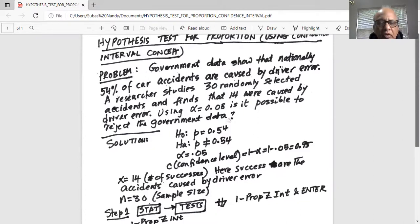And the alternate hypothesis, since we have not been told greater than or less than, the safe assumption for the alternate is p not equal to 0.54.